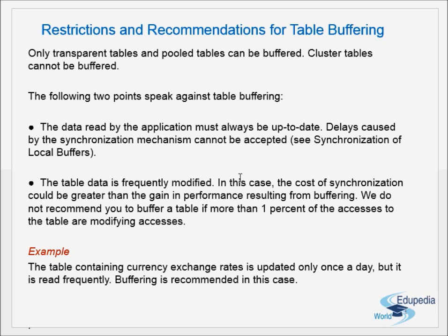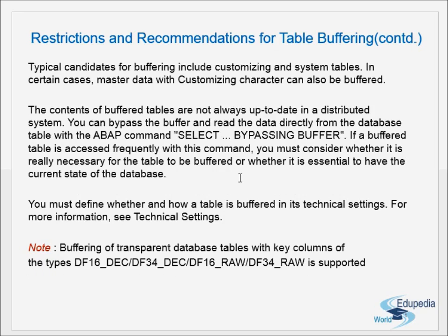More typical candidates for buffering include customizing tables and system tables. In certain cases, master data with a customizing character can also be buffered. Customizing tables contain data that is largely static — system tables and customizing data are hardly modified. SAP recommends buffering customizing and system tables, and in some cases even master data with customizing character.